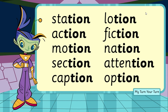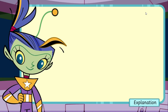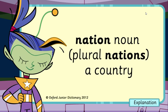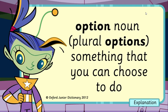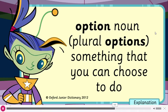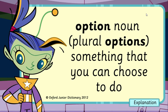Well done! I think we need a vocabulary check on the words nation and option. Let's ask the dictionary what they mean. Nation. Noun. Plural, nations. A country. Option. Noun. Plural, options. Something that you can choose to do. Great! Got it!